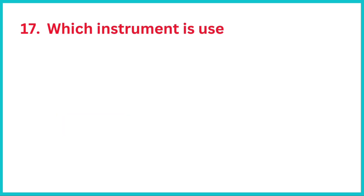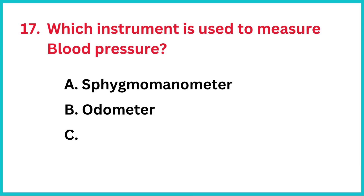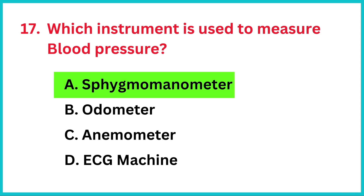Which instrument is used to measure blood pressure? The correct answer is option A: Sphygmomanometer.